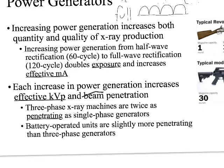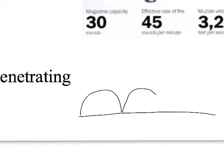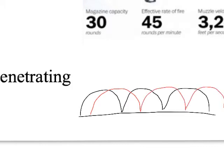For three-phase power, imagine singing 'Row, Row, Row Your Boat' in rounds. The first group starts, then we tell a second group to start slightly out of sync, then a third group — that's three-phase. What we've done by having three groups sing is upped the average KVP so that the energy never really dips below a certain line. The x-rays are always being produced up in that range and are more or less continuous.